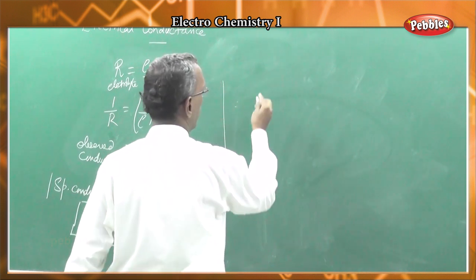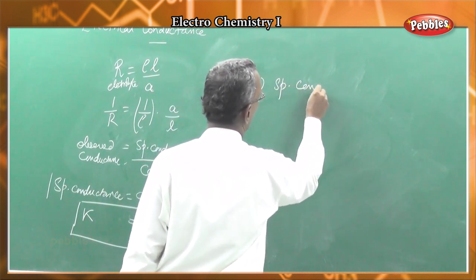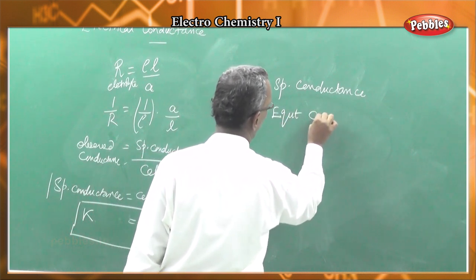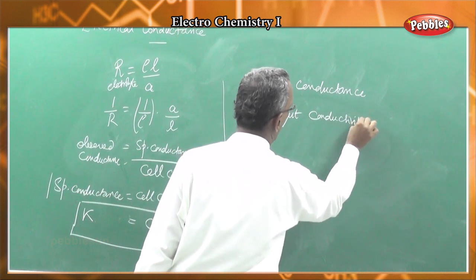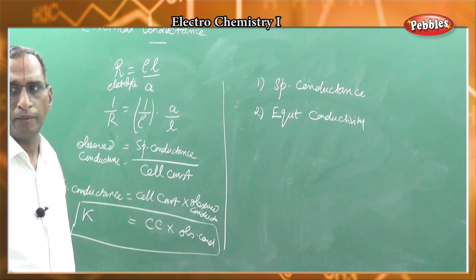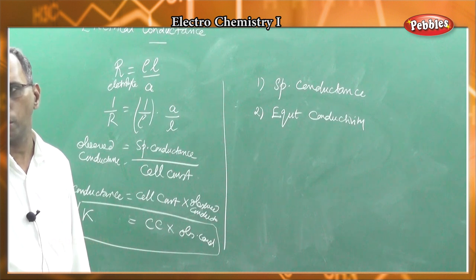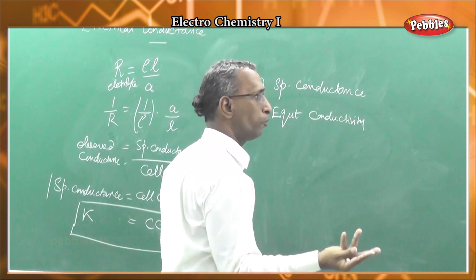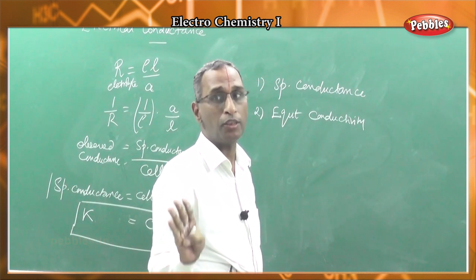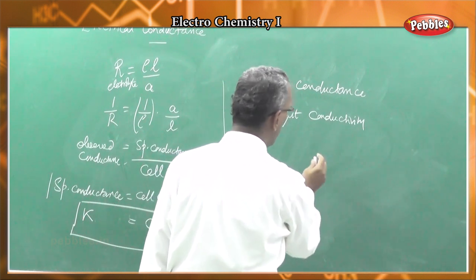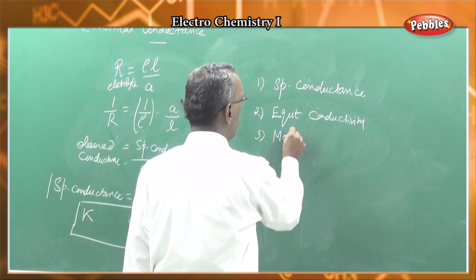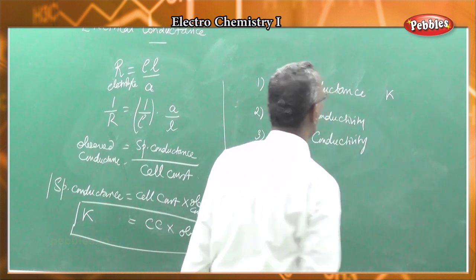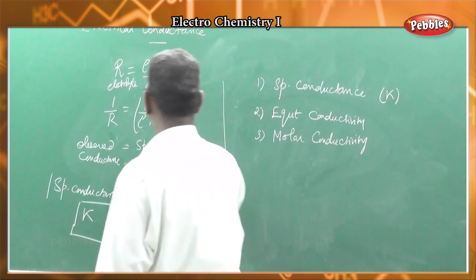The three important conductivity terms are: specific conductance or conductivity, equivalent conductance or equivalent conductivity, and molar conductance or molar conductivity. Specific conductance is denoted by kappa, equivalent conductance is denoted by lambda, and molar conductivity is denoted by mu.